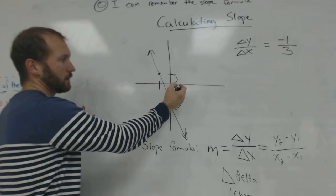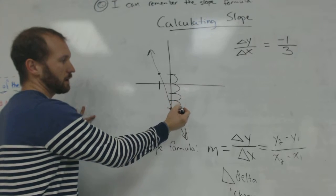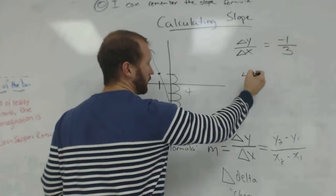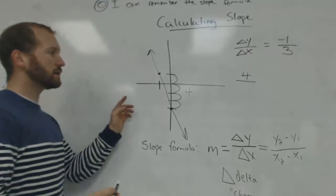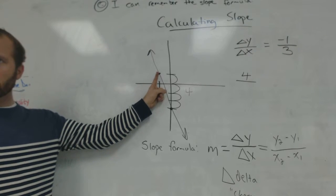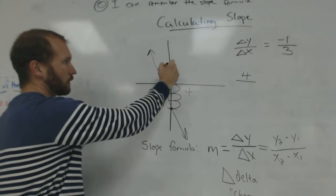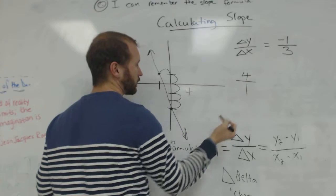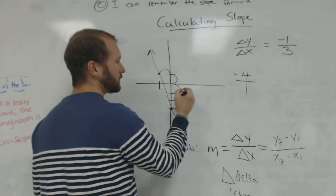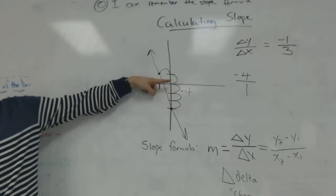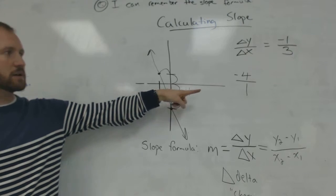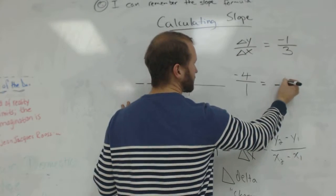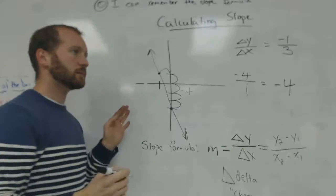So from this point to this point, how much does y change by? Well, we go from 1 to 0 and negative 1, negative 2, negative 3. Y changed by 1, 2, 3, 4. My change in y is 4. And what is my change in x? I start here and I'm just going over 1. So my change in x is... My change in y is negative, because I went down. My change in x is 1. So I have a slope of negative 4 over 1, which is just negative 4. That's my slope here.